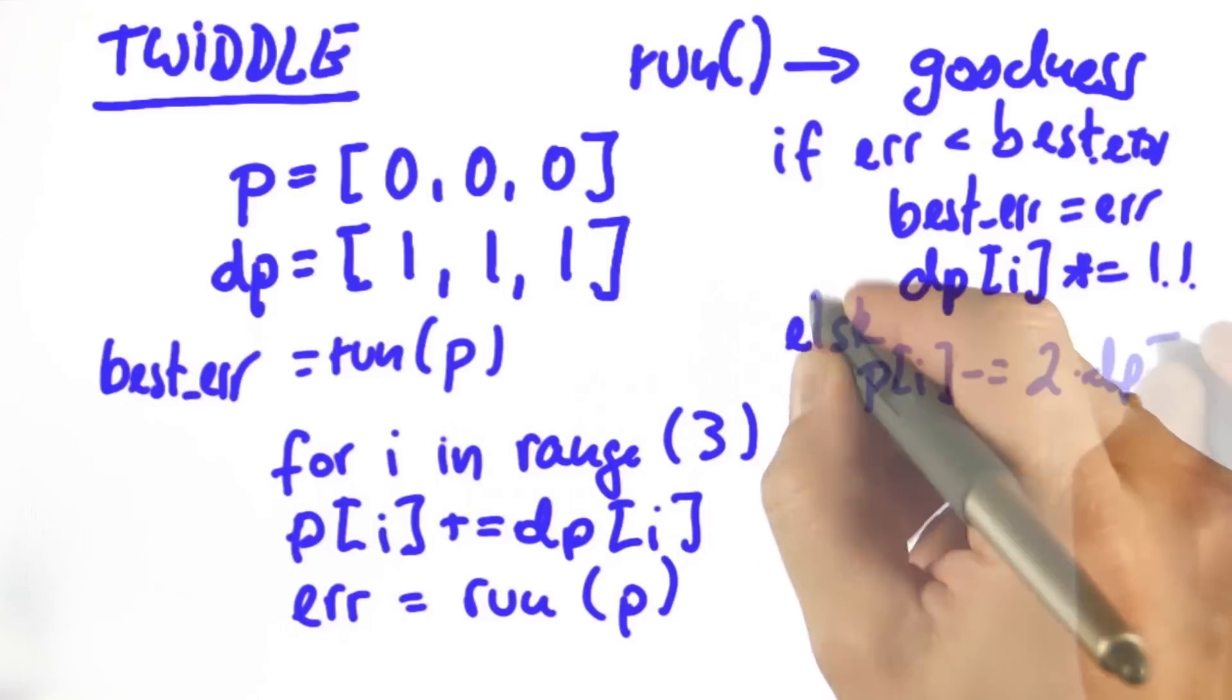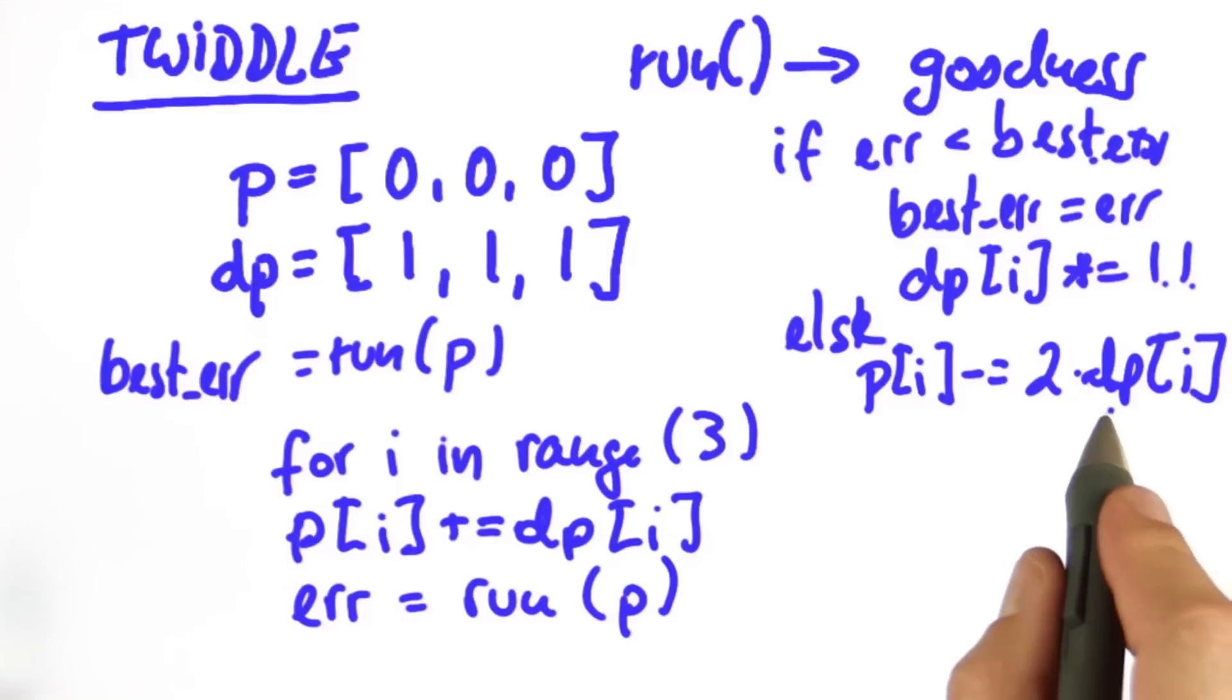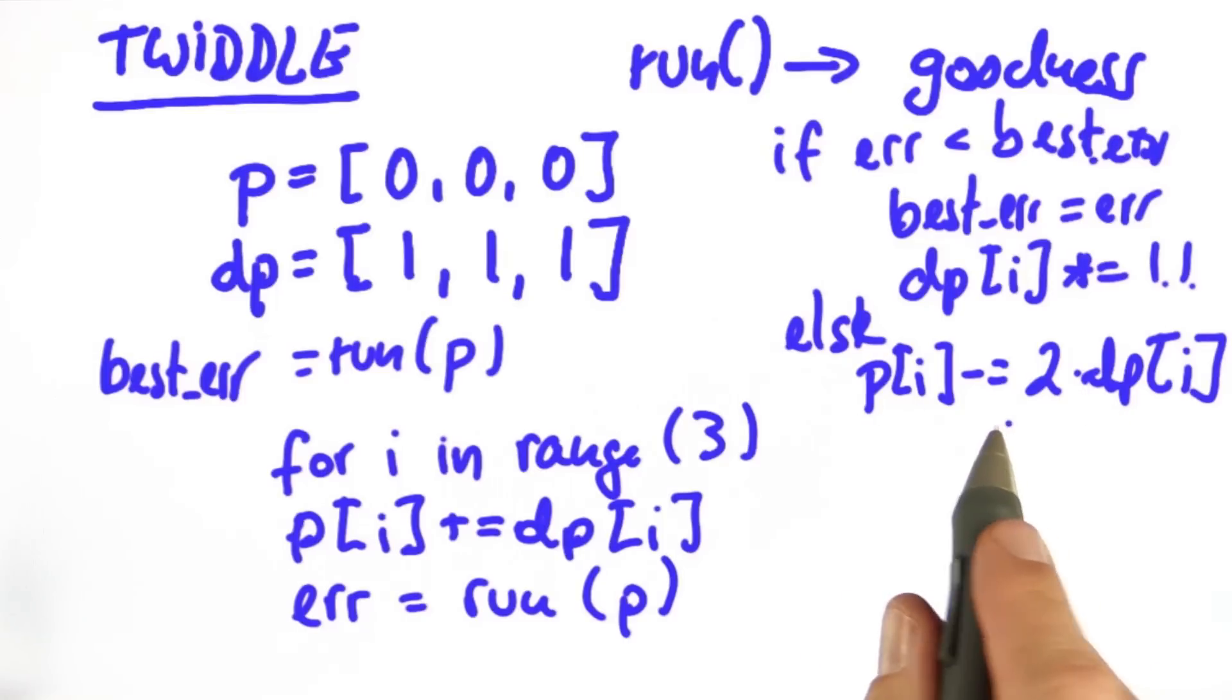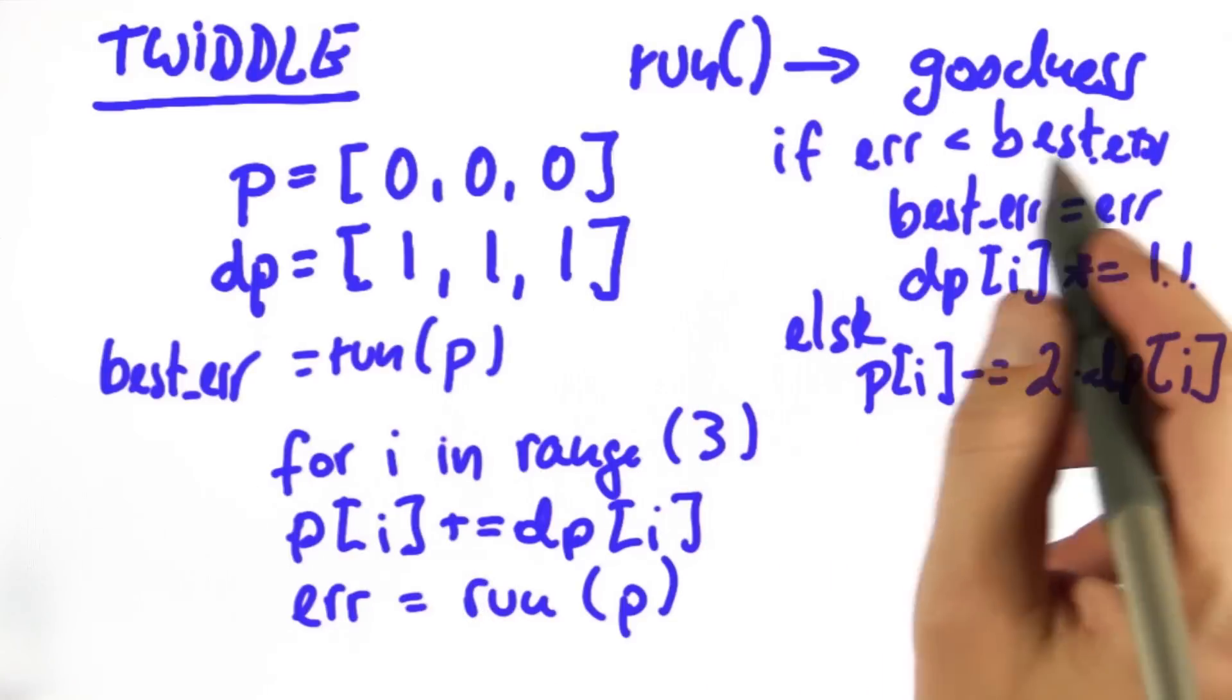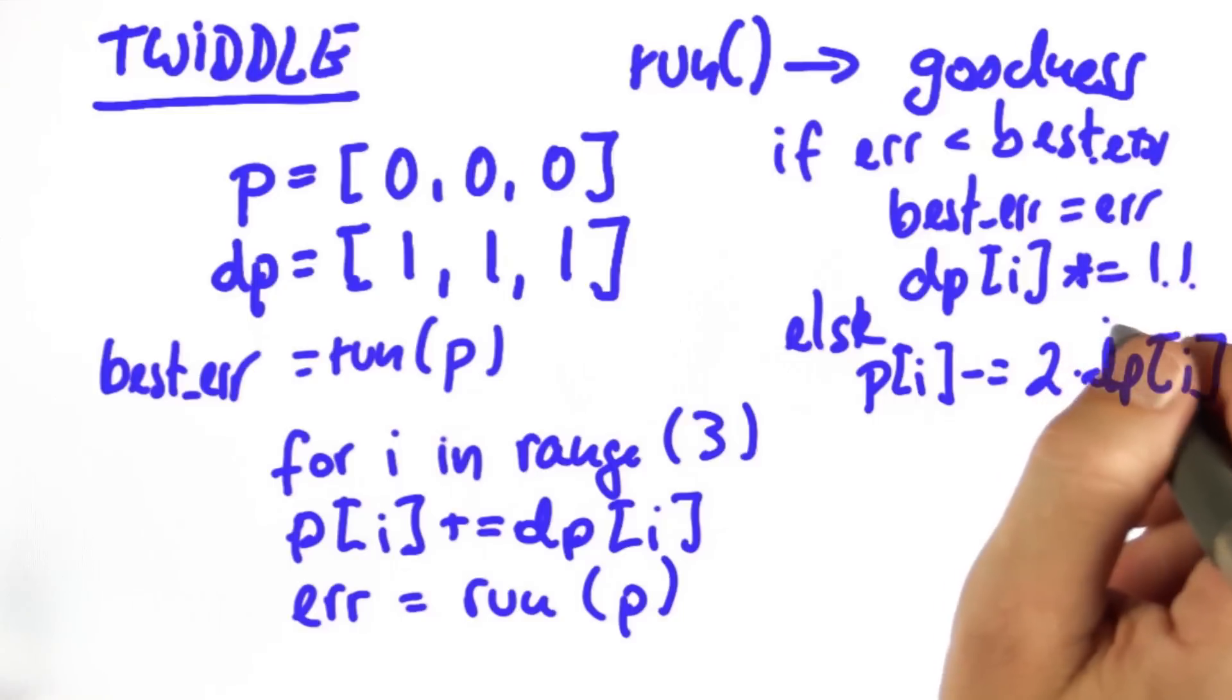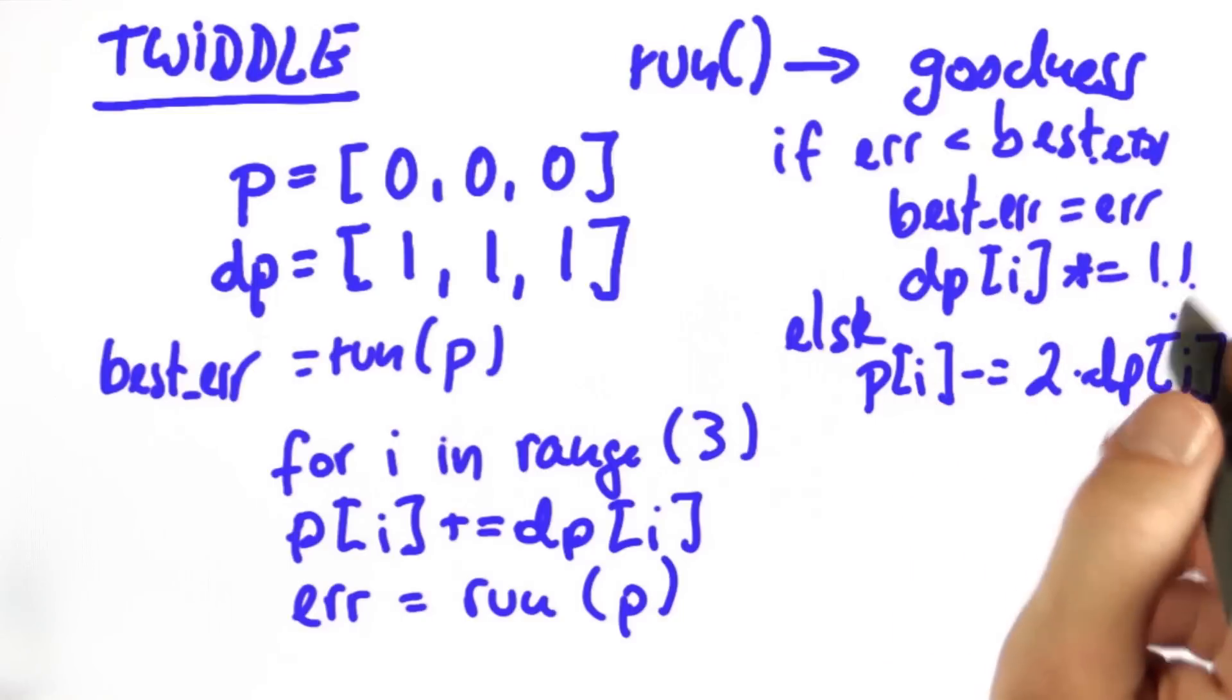Otherwise, we try the other way. So we subtract dp from p. And we have to do it twice now because we added it before. And then we do the same thing again. We check whether the error is better than our best error, and then we retain it and we multiply dp up by 1.1.